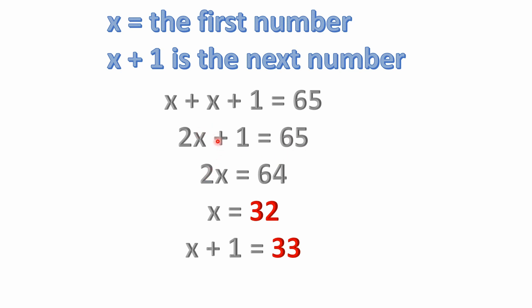Then that would leave us, if we subtract one from both sides of this equation, that leaves us with 2x, because we're going to get rid of this one. And then 65 minus 1 is 64. So 2x equals 64.